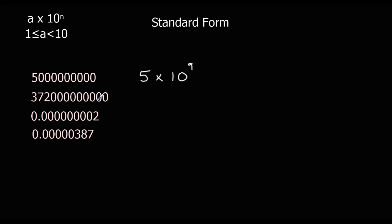The number between 1 and 10 here is 3.72. How many times have we got to multiply by 10? 1, 2, 3, 4, 5, 6, 7, 8, 9, 10, 11 times. So it's 3.72 times 10 to the power of 11.